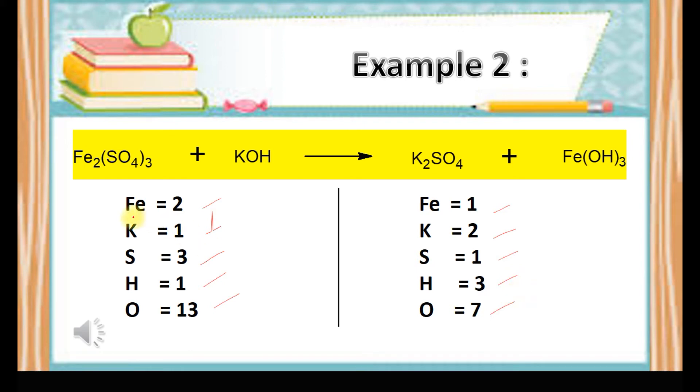All elements are not balanced, so we go for step 2: balance the metal first. Iron on the left side has 2 but on the right side only 1, so we need to put 2 on the right side to make it balance. Next, we balance potassium: the left side only has 1 but the right side has 2, so we put 2 on the left side.